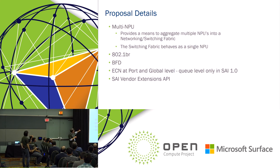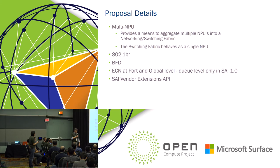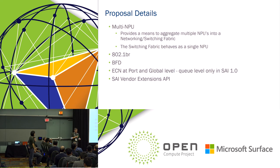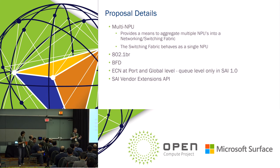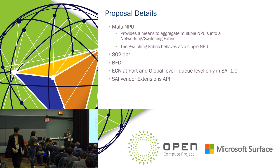We have other protocols on the roadmap: 802.1BR is one of the main ones. BFD and ECN are enhancements that provide extra reliability. The SAI vendor extensions charter is essentially a mechanism — not an API by itself — but a document that allows us to innovate, increase velocity, and allow vendors to differentiate. We recognize we cannot have a one-size-fits-all solution, so we want to allow people to extend the API with attributes or objects specific to a particular vendor or technology. Thank you very much.